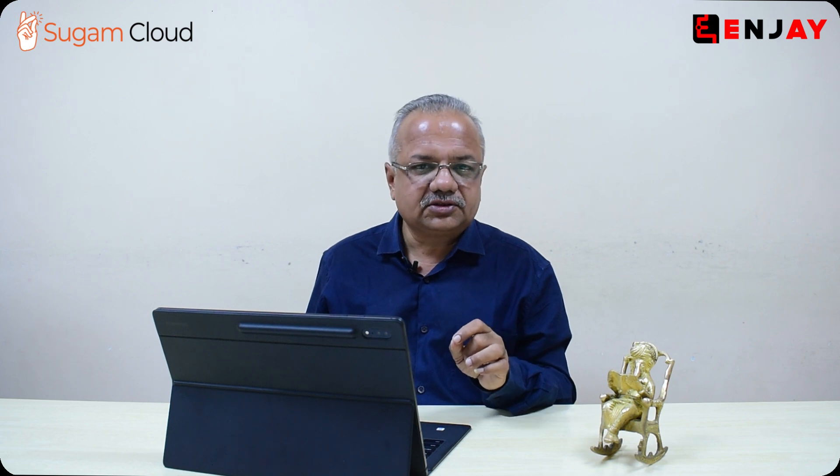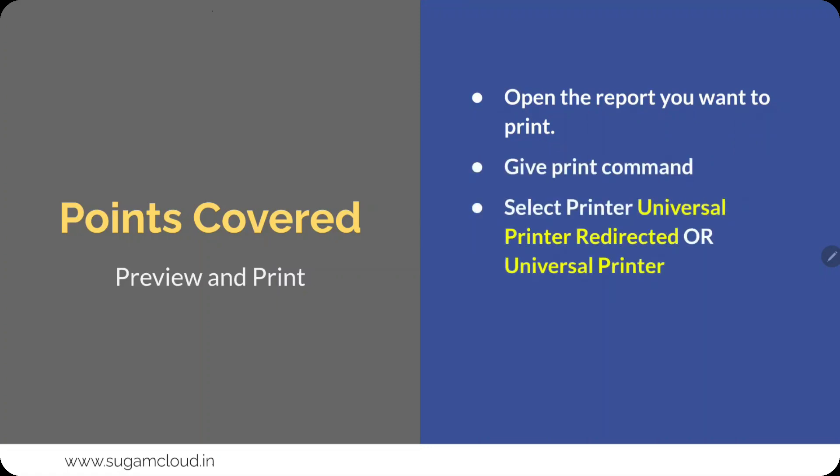What points are covered in this? There are just two steps: you preview and then you print. You open the report you want to print, then give the print command and select the printer — universal printer redirected or universal printer.